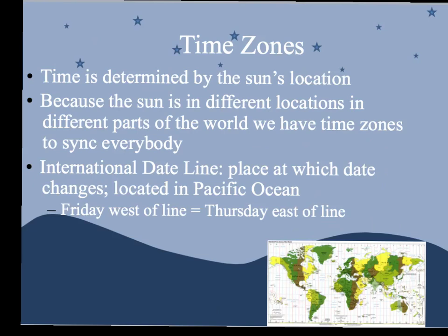Time zones are determined by the sun's location. Because the sun is in different locations in different parts of the world, we have different time zones so we can all be synced on some universal schedule. The international date line is the place where the date changes over — it is located in the Pacific Ocean. On one side it's Friday, on the other side it's Thursday.